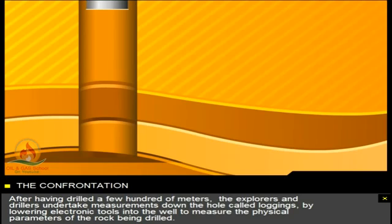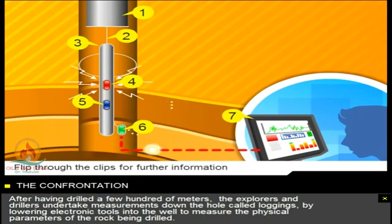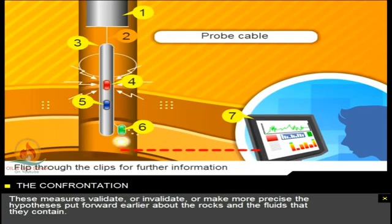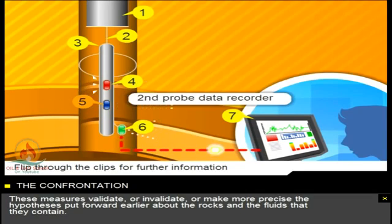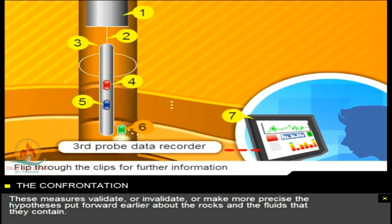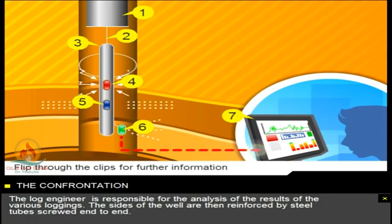After having drilled a few hundred meters, the explorers and drillers undertake measurements called loggings down the hole, by lowering electronic tools into the well to measure the physical parameters of the rock being drilled. These measures validate or invalidate, or make more precise the hypotheses put forward earlier about the rocks and the fluids that they contain. The log engineer is responsible for the analysis of the results of the various loggings.